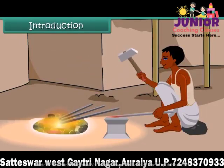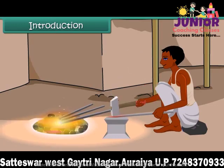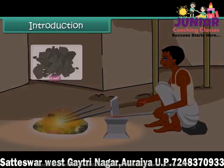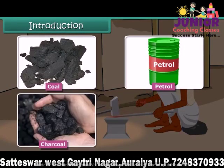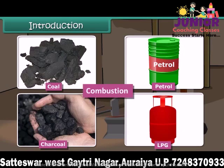The blacksmith burns coal to get hot iron which can be beaten to desired shape. A variety of fuels is used in daily life such as coal, petrol, charcoal, LPG, etc. Do you know which chemical process is taking place during the burning of these fuels? It is combustion. In this lesson you will learn about combustion of fuels.